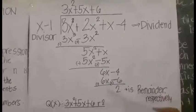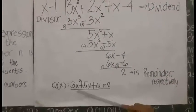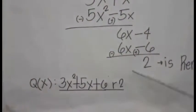Negative 4 plus 6 equals 2. So, therefore, 2 is the remainder. Our quotient is 3x squared plus 5x plus 6, and the remainder is 2.